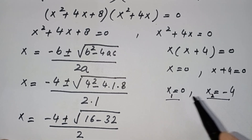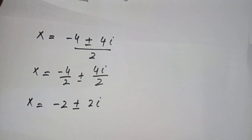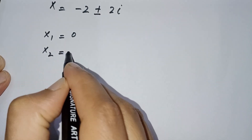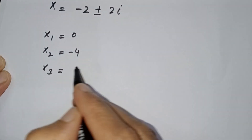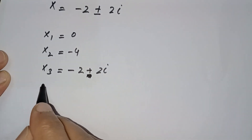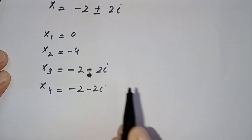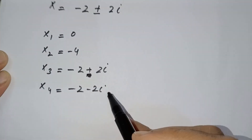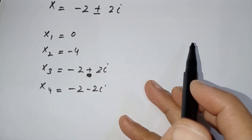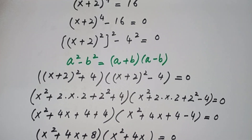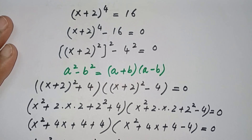Writing all four solutions together: x₁ = 0, x₂ = −4, x₃ = −2 + 2i, and x₄ = −2 − 2i. We have four solutions — two real and two complex. That's all about this question. Thanks for watching, don't forget to subscribe for more solutions and videos. Bye!